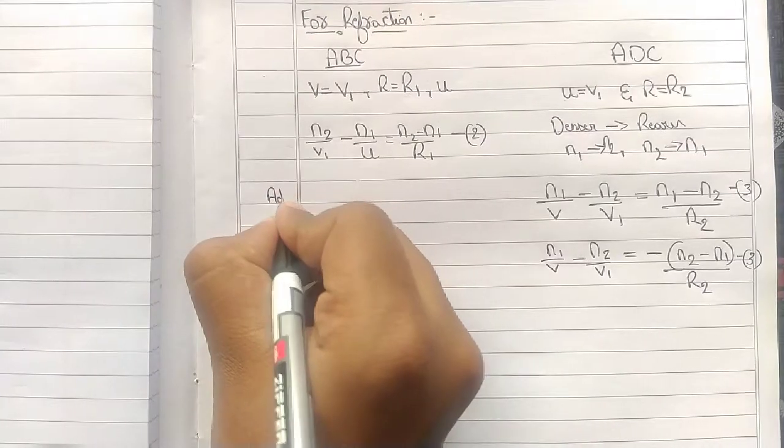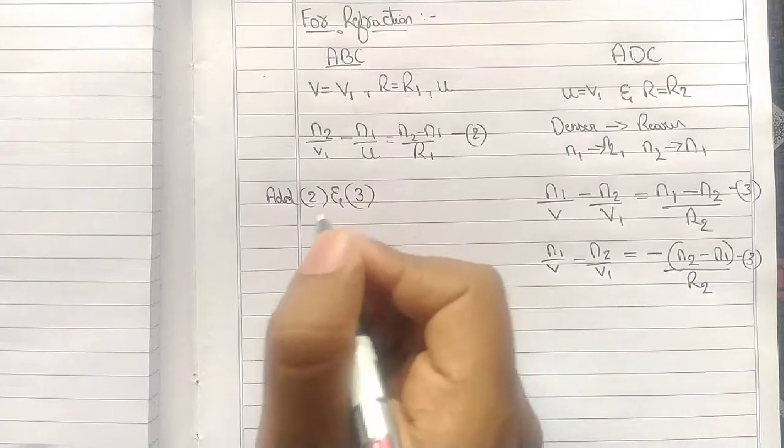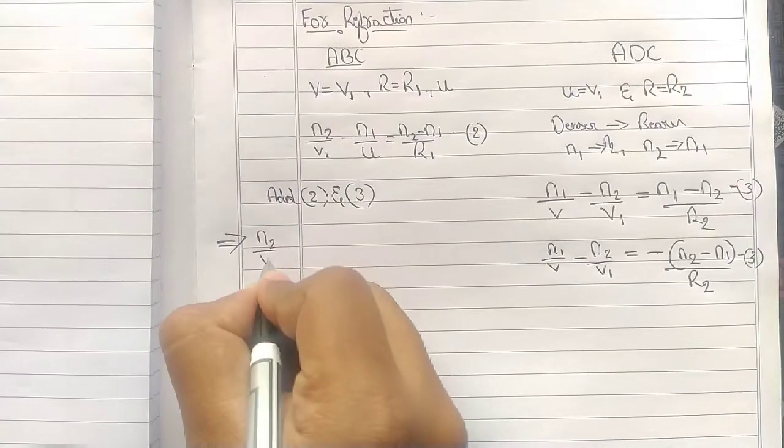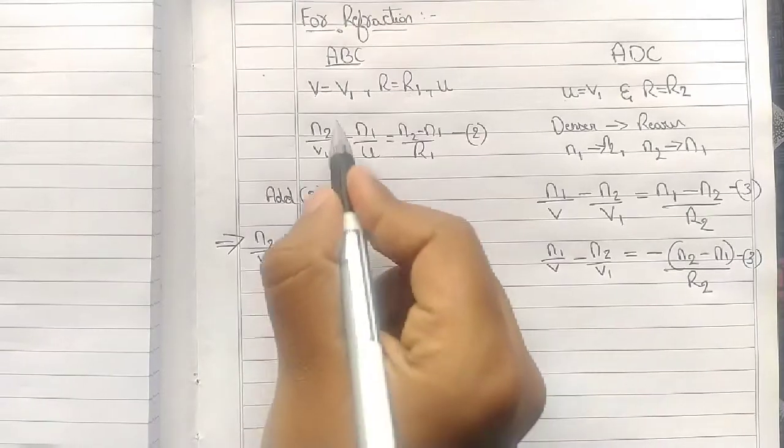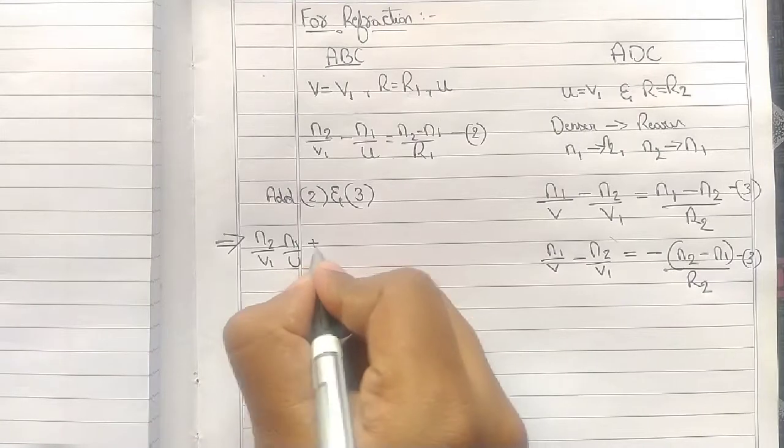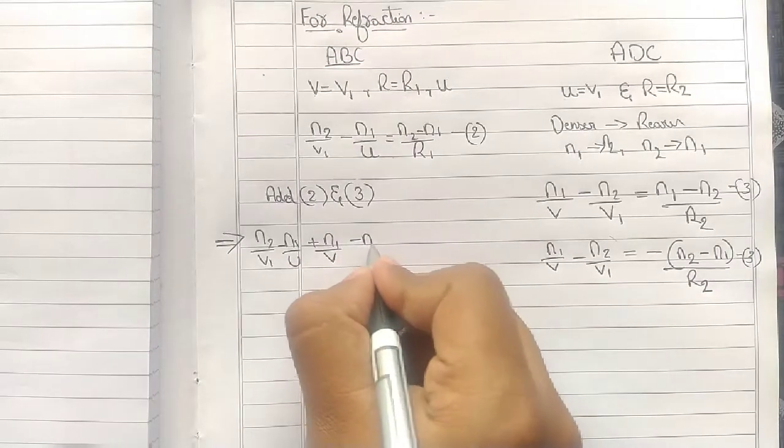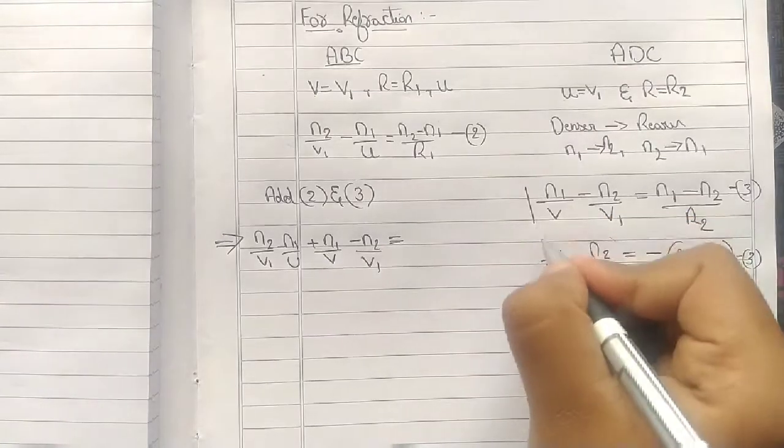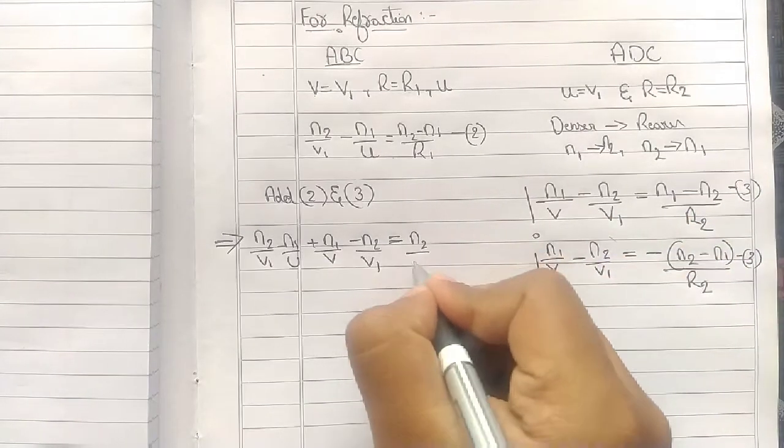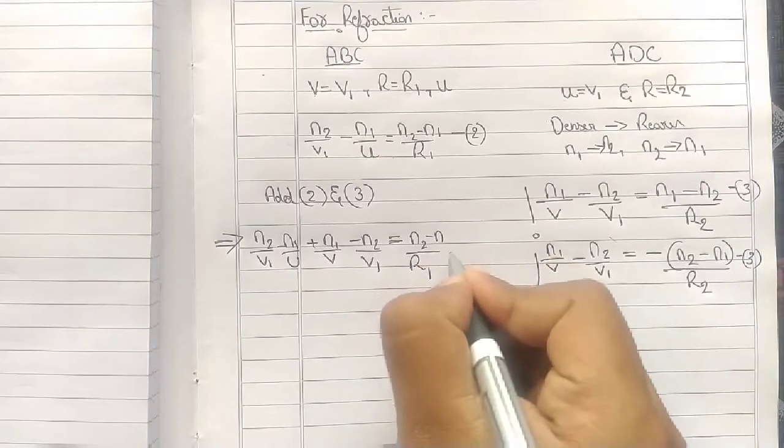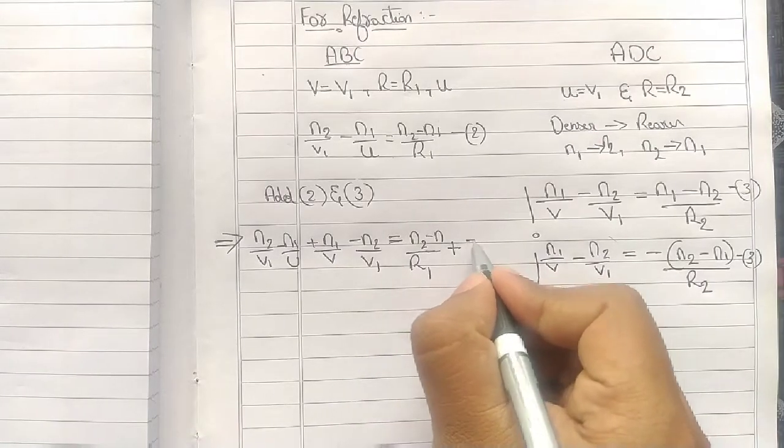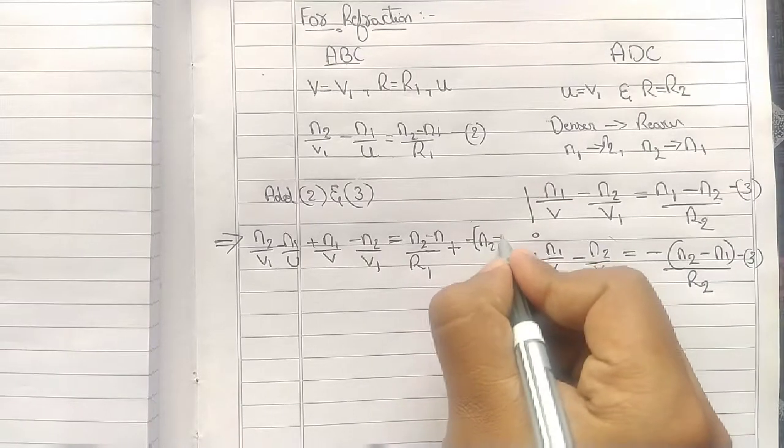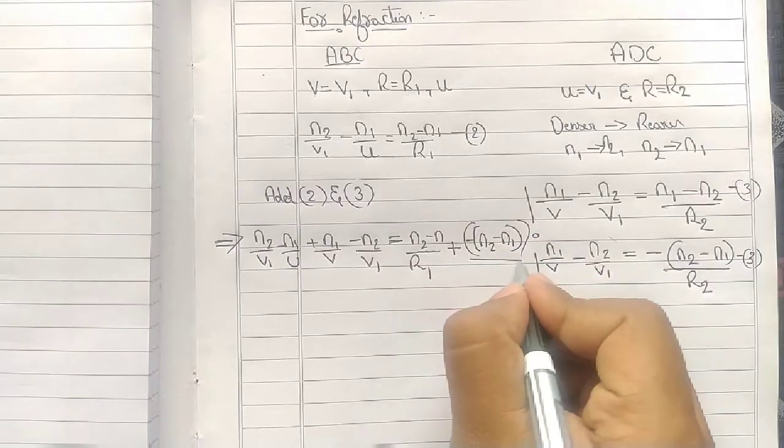Next is all simple process. Now add equations 2 and 3. On adding, N2 by V1 minus N1 by U plus N1 by V minus N2 by V1 equals N2 minus N1 by R1 plus minus of N2 minus N1 divided by R2.